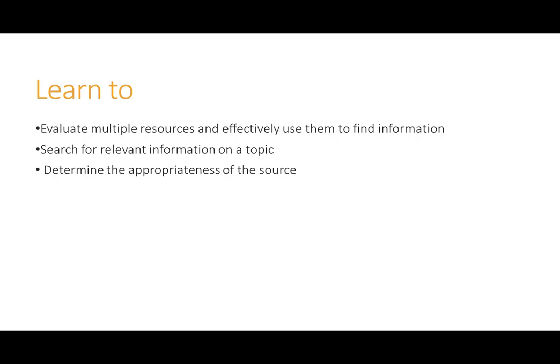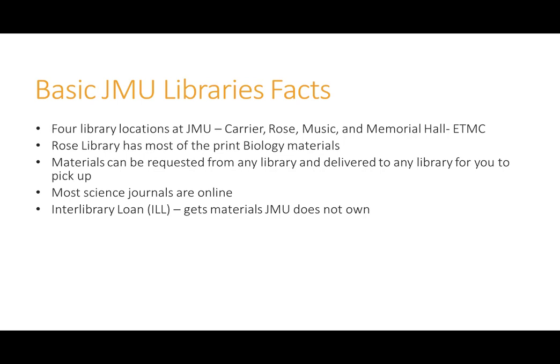Before we dig into how to find resources, let's go over the basics of where to find resources at JMU. There are four different library locations at JMU: Carrier, Rose, Music, and ETMC. Rose Library is on East Campus and holds most of the science-related books. Materials that you want to check out can be requested from any library and then delivered to the library that is in the most convenient location to you.